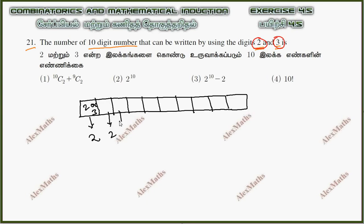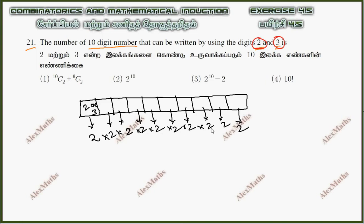For all of the digits there are 2 options, so the total number of ways is 2 multiplied 10 times, which gives us 2 to the power of 10. Simplified, that is 1024. The answer is 2 power 10, so we choose option 2.